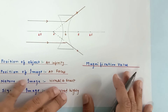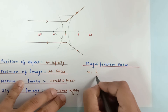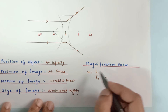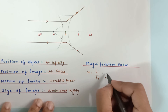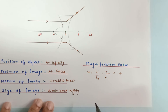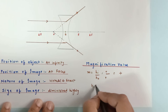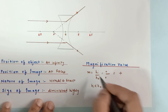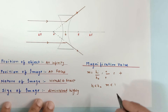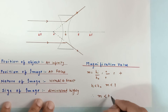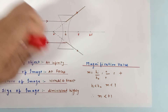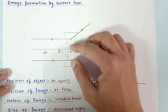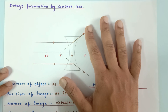Now let's talk about magnification. We know magnification equals h-image divided by h-object. The height of the object is always positive. Due to the virtual image, the image is also erect, so image height is also positive — positive divided by positive gives a positive answer. Since the image height is smaller than the object height, the numerator is less than the denominator, meaning the magnification value is less than 1. So the magnification for a concave lens is less than plus one. Concave lenses are diverging in nature and are used to treat eye disorders.